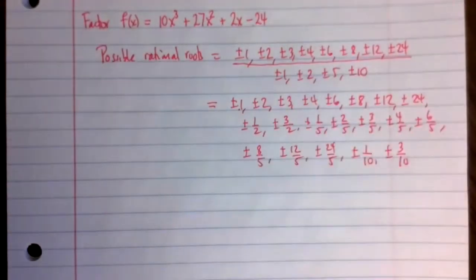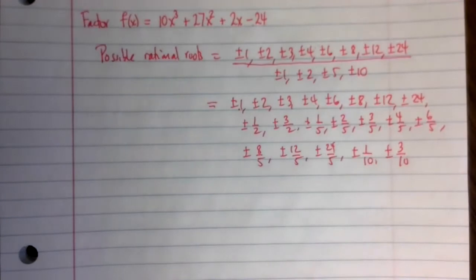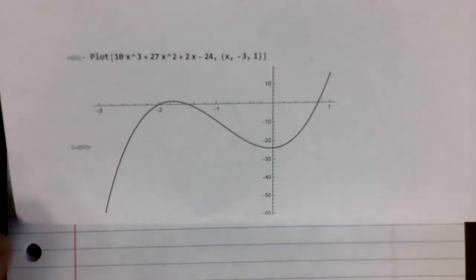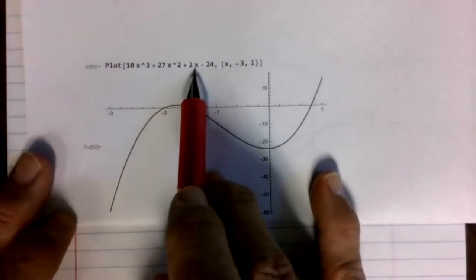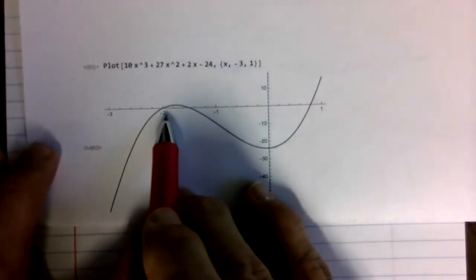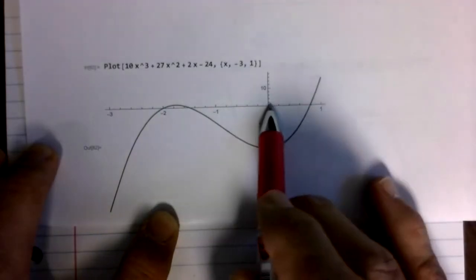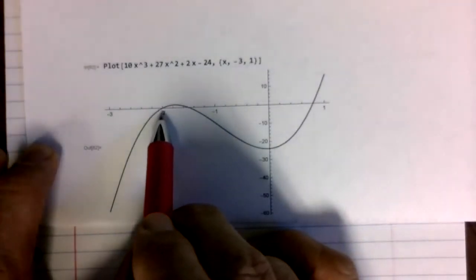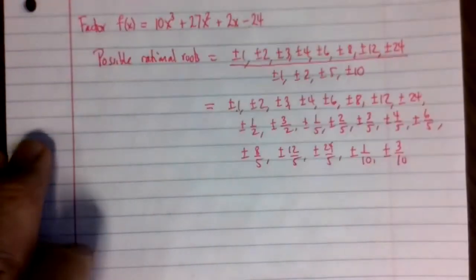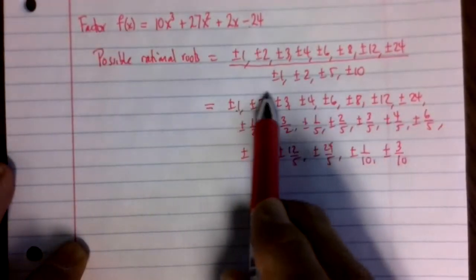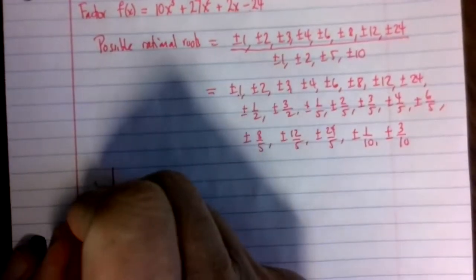Now, how do we figure out which one of these works? Back in the old days, it was just trial and error. Just try out 1, try out 2, try out 3, and just see if you happen to find one that works. These days, this can be done a little bit faster by using technology. So you can use your calculator, and I've printed out here the graph of 10x³ + 27x² + 2x - 24. And it looks like we've got roots here at negative 2, and something else here between negative 1 and negative 2, and something here between 0 and 1. But it looks like negative 2 is a root. And so I can use that, and I see negative 2 is one of my possible rational roots. So that's a way to guess at what the first thing to try.